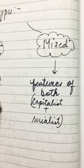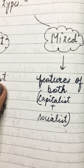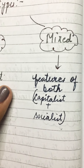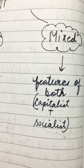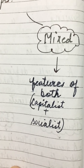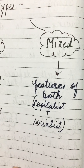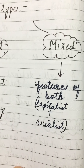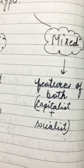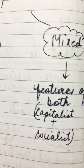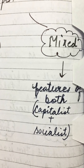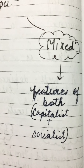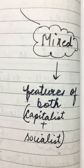Then comes the third type - the mixed economy. Mixed means it combines features of both capitalist and socialist economies. It will be an economy where people have private freedom AND there is government control. The most important example is the Indian economy - India is a mixed economy with both rules and regulations from government and private sector freedom. Both private and government sectors co-exist.